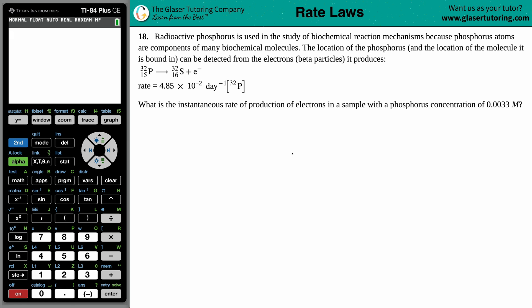18. Radioactive phosphorus is used in the study of biochemical reaction mechanisms because phosphorus atoms are components of many biochemical molecules. The location of the phosphorus and the location of the molecule it is bound in can be detected from the electrons, which are beta particles, it produces.